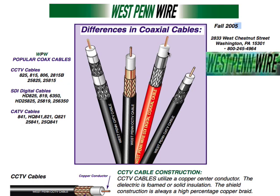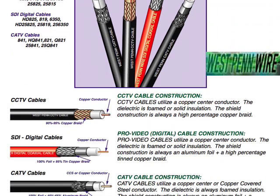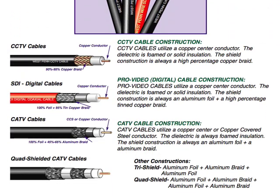So when specifying an RG-6, make sure you clarify what the application is — RG-6 CCTV or RG-6 CATV. It comes down to the design of the cable because you can specify an RG-6 or an RG-59, but as the manufacturer, we have to know what the application is to fit that cable into the application you're requesting.